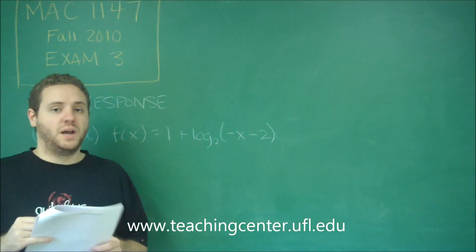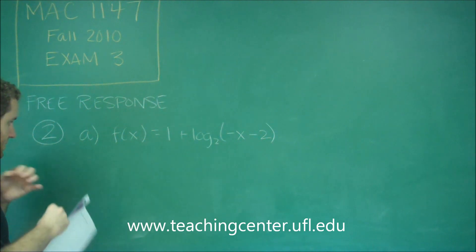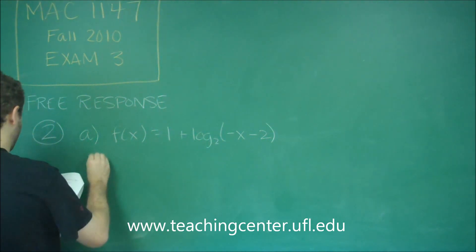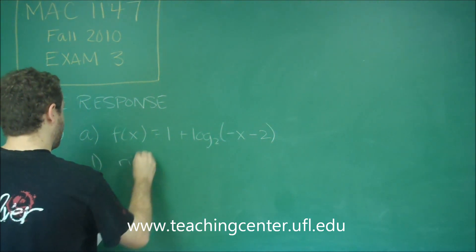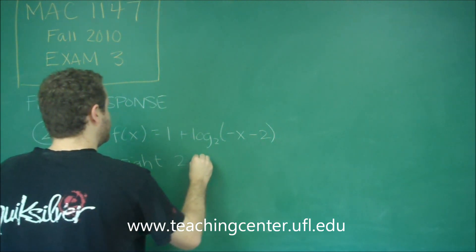We have a horizontal shift to the right by 2 units. So 1 we have right 2 units.